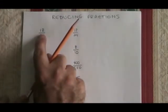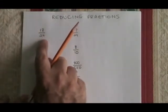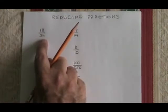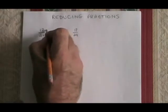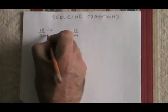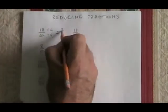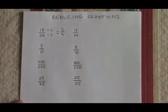Well, the factors of 18 include 6, and so do the factors of 24. 6 is the greatest common factor of 18 and 24. So if we divide both of them by 6, we end up with 3 over 4, and our fraction is reduced.